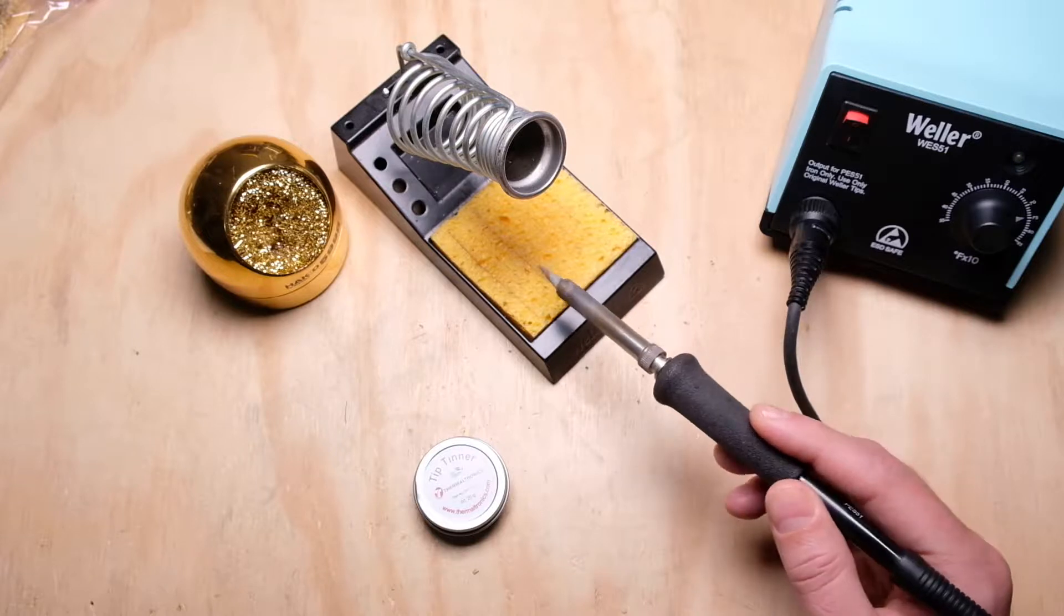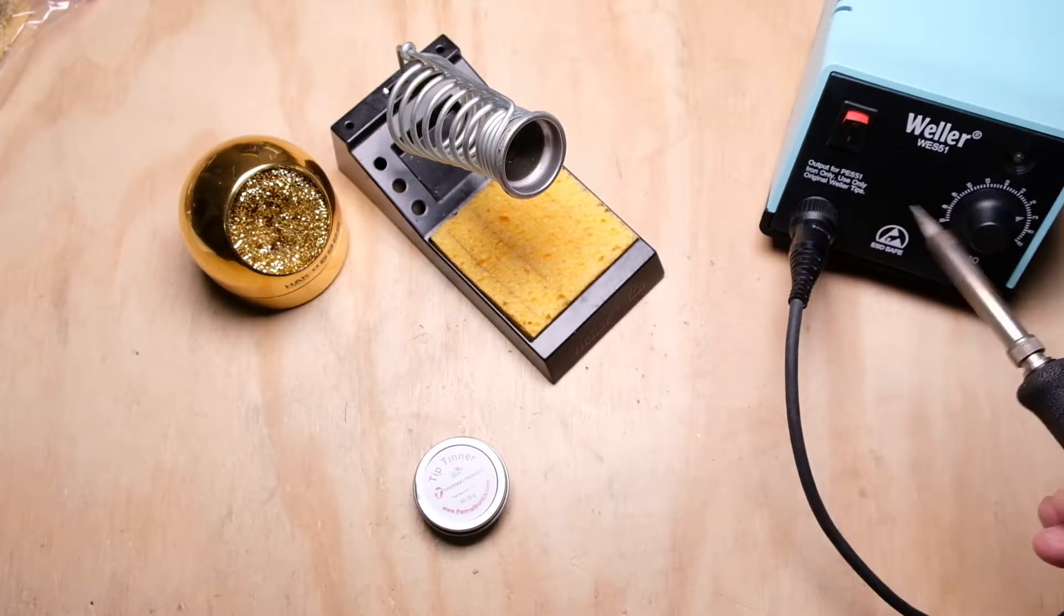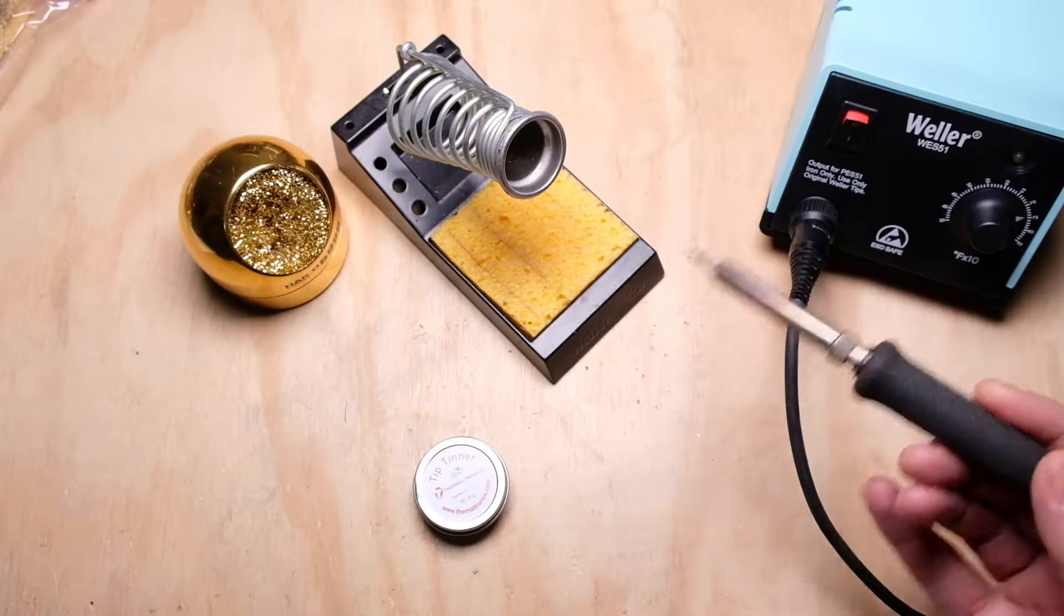If you do notice a lot of heat loss when using a sponge, you may raise your tip temperature a little bit, get a more powerful iron, something like that.